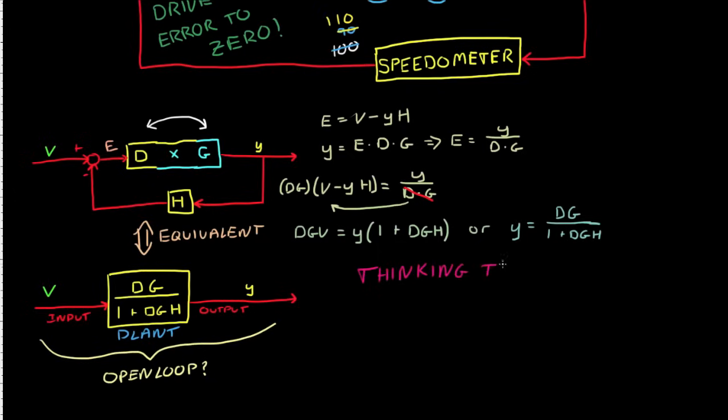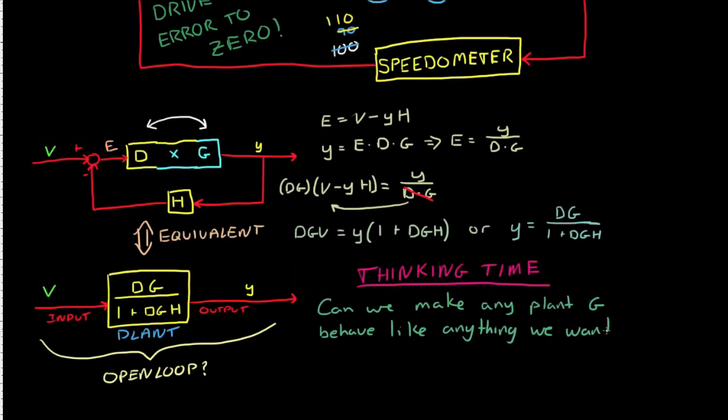Now here's something to ponder until the next video. What are the limitations of feedback control? In other words, can we make any plant G behave like anything we choose, just by adding a feedback control system, which is made up of a controller D and a sensor H?